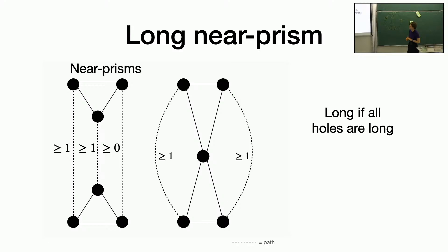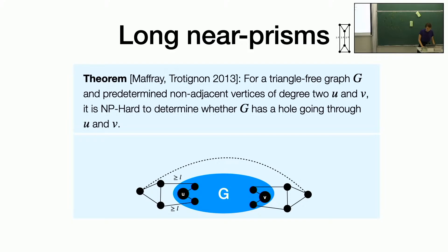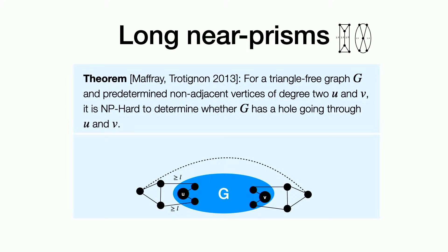The next configuration is a near prism — essentially the same thing as a prism. The idea is you have two triangles; in the first case they're both vertex disjoint, and you have paths going between the two triangles. For the purposes of this algorithm, it was helpful to also include the four-wheel, so we allow two of the triangles to share vertices. We call it long if all holes are long. The technical configuration is not a great name for a couple of reasons. In 2013, Frédéric Maffray and Nicolas Trotignon strengthened Bienstock's result by showing it's still NP-hard to see if there's a hole going through two specific vertices, even in a triangle-free graph where those two vertices have degree 2.